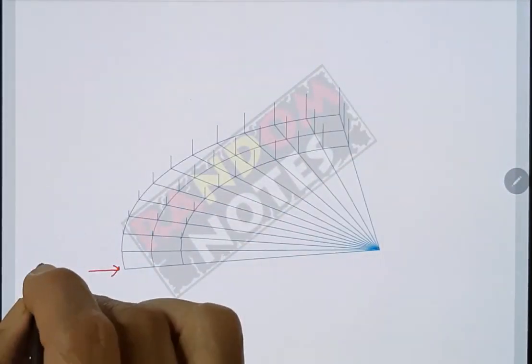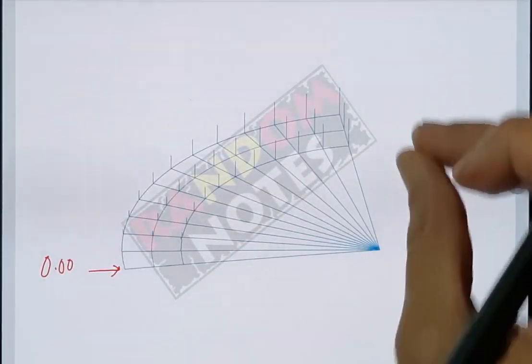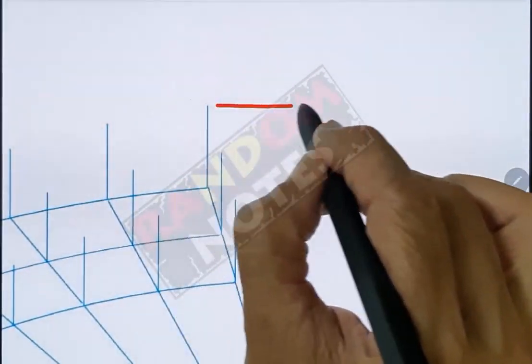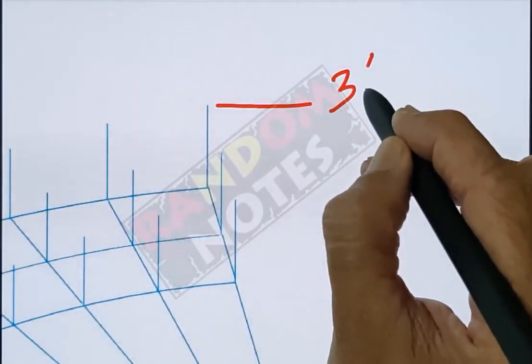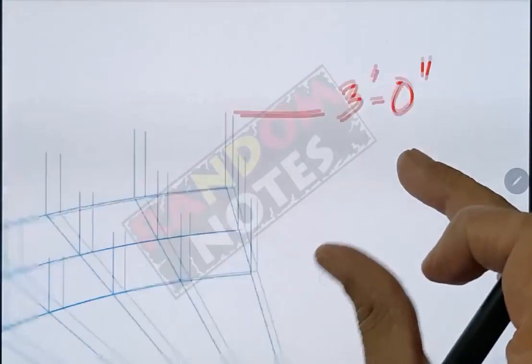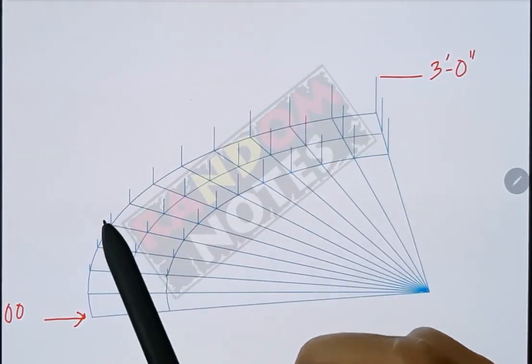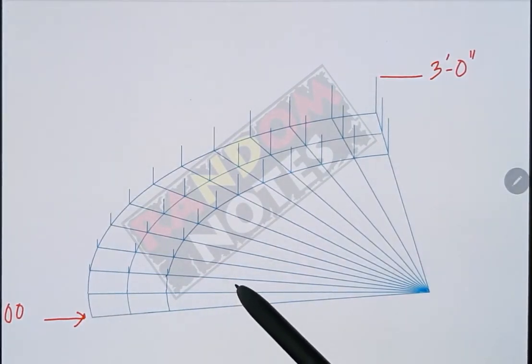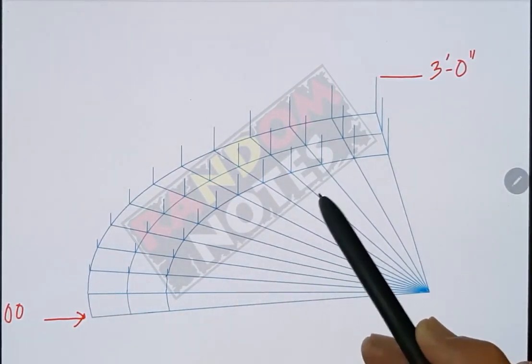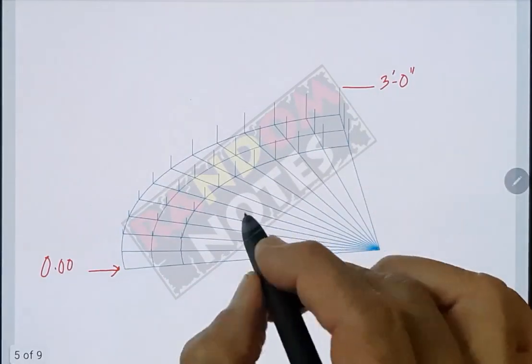At this point the rise of the ramp is 0.00 and here it has reached the highest point of 3 feet. And as we move towards left each set of verticals reduces by 3 inches since we have made 12 equal divisions with the radial lines.